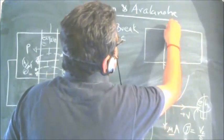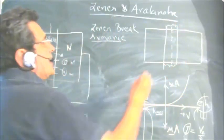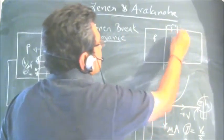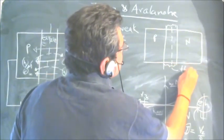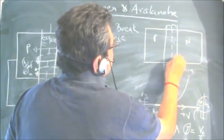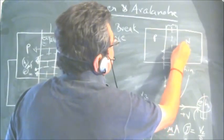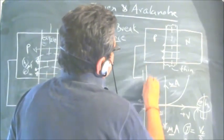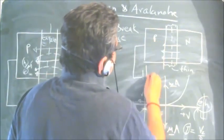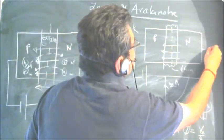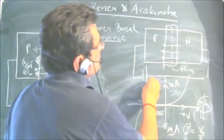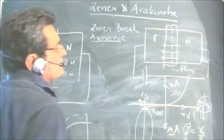A zener diode is formed by having P and N type semiconductors that are heavily doped. As a result, the depletion region is thin and the electric field in this region is quite high. When the reverse bias voltage is applied — P side connected to negative and N side to positive — there is a high electric field in the depletion region.